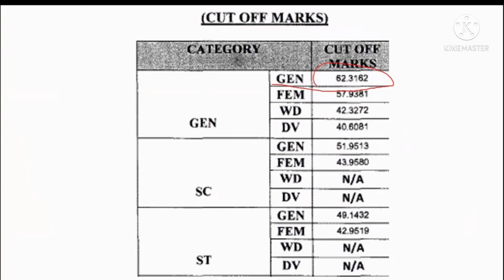The female cut off was 57. The OC category was 42. The divorcee category was 40.60. The SC category was 51.95. The SC female cut off was 43.95, and the female cut off was 42.95.